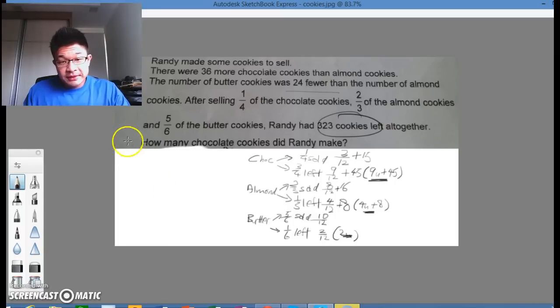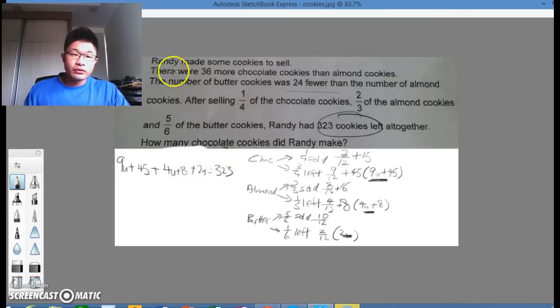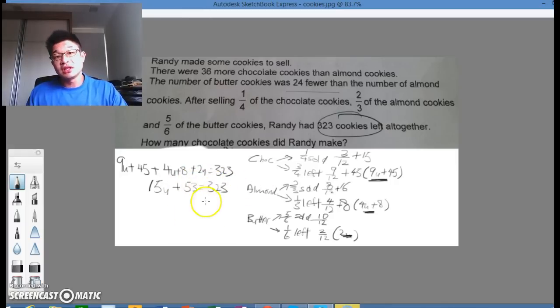So what happens now is we have nine units and forty-five plus four units and eight and another two units will make up three hundred and twenty-three. When the students by now at P6, they would learn simple simplification. What they will be able to end up is with fifteen units and fifty-three will end up with three hundred and twenty-three. Now, at this point in time, we do not teach students.